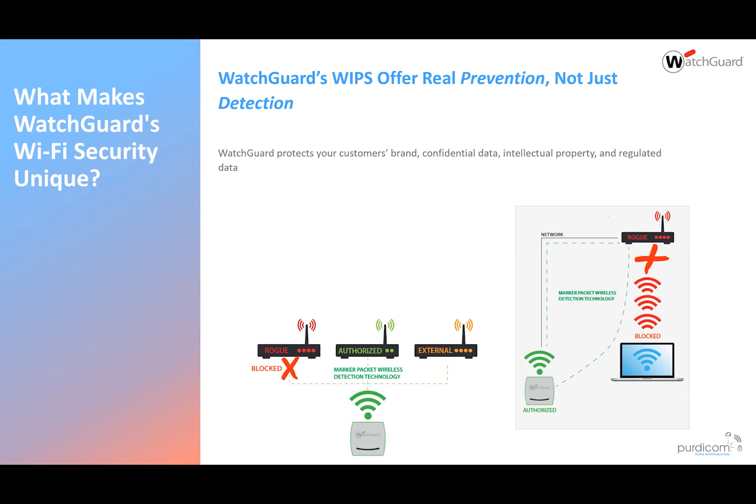This is where we're slightly different. Because we're actually identifying this, we're able to do the deauthorization required to take the rogue unit out legally. Third-party vendors are unable to do this legally because they're not 100% sure the device is actually connected to the network. Because we're interjecting on the wire, we can say 100% that device is connected to our network and we are acting legally.